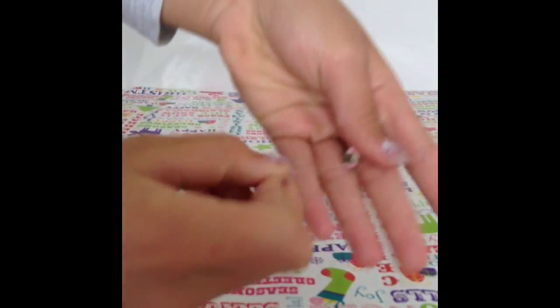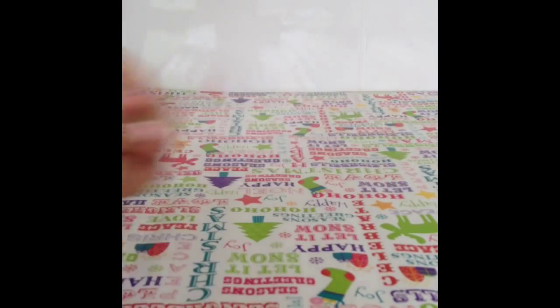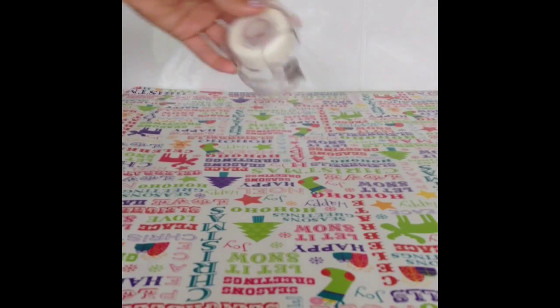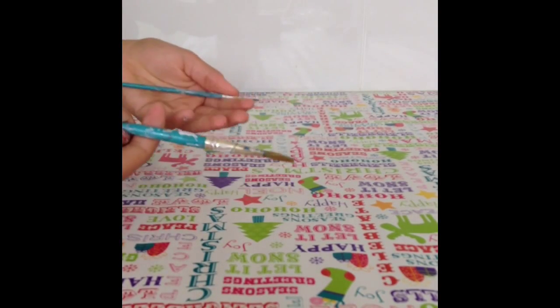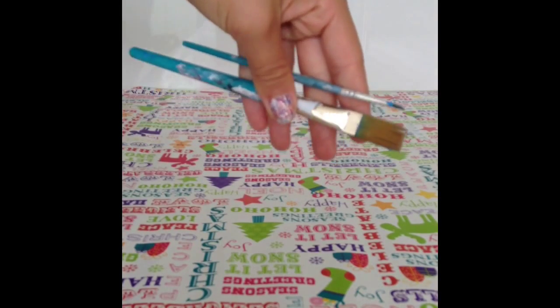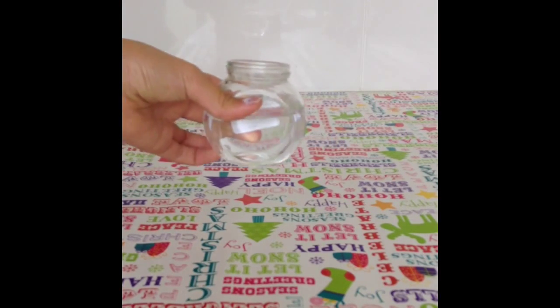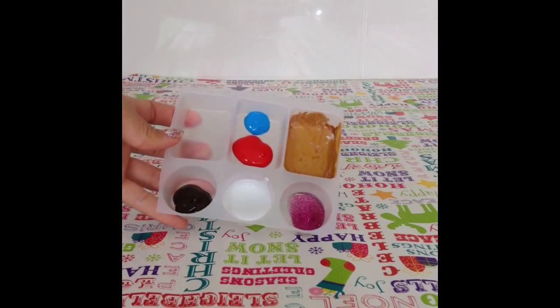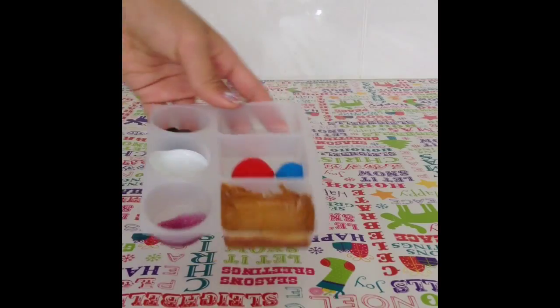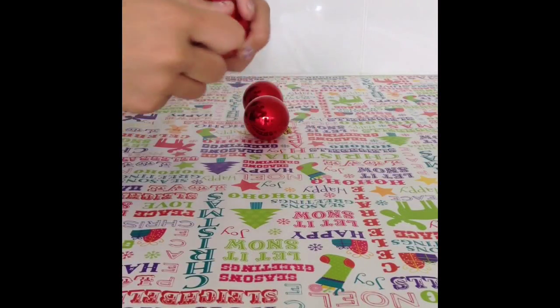You'll also need some sticky tape, paint brushes in two sizes, one big and one small, and a jar or glass of water. Then put your paint into the dish.